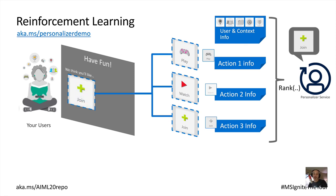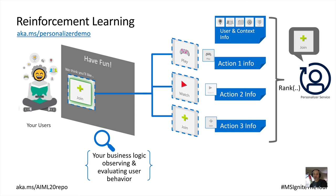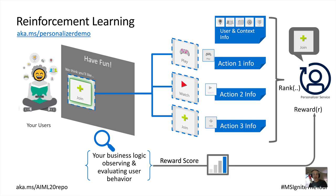To determine if the user is happy with our suggestion, we look at what the user does next. According to our business logic, we assign a reward score between 0 and 1 — spending more time playing a game, reading an article, or spending money in the store might lead to a higher reward score. Personalizer then feeds that information back into the ranking system for the next time we need to feature an activity.